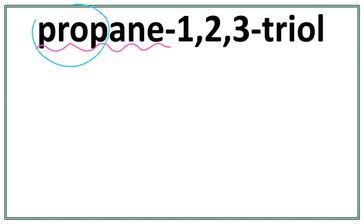Now, 'prop' right here tells us that there are three carbons in the longest carbon chain, or in the parent chain. This 'ane' here tells us that there are only single bonds present between the carbons in the parent chain.